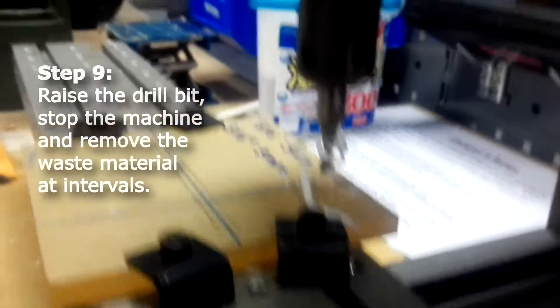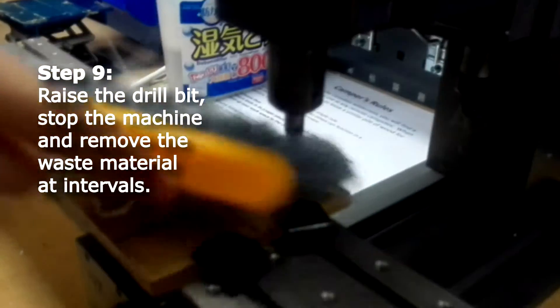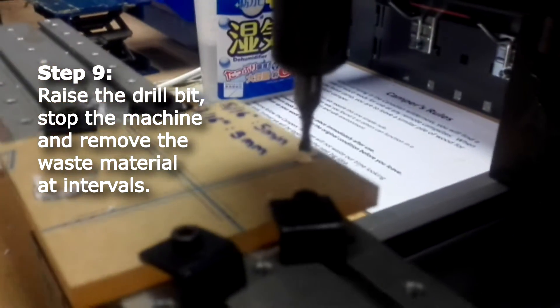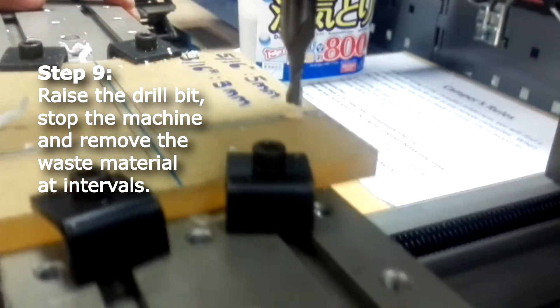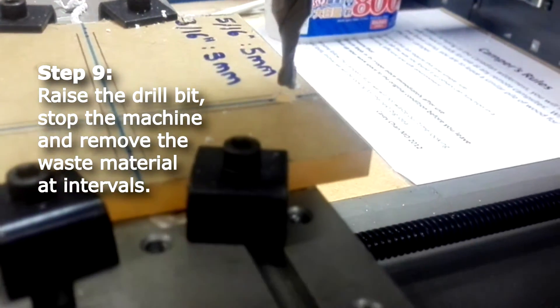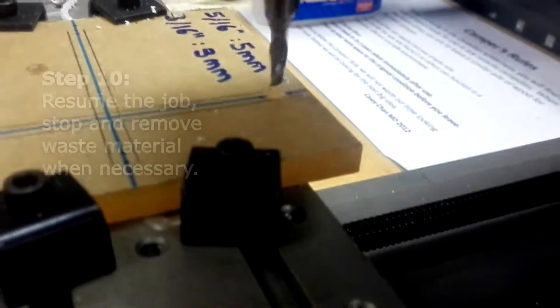Stop the machine and remove the material. This is to prevent the extruded material from hindering your drill bit from going down. After you have cleared the material, resume.